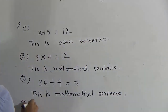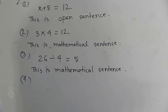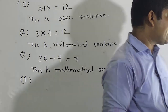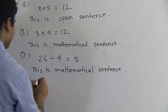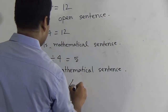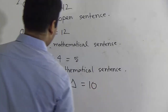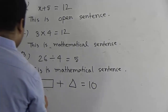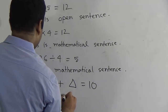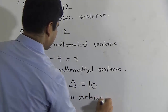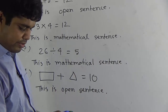Number 4: putting a quadrilateral and a triangle together makes 10. We write: quadrilateral plus triangle equals 10. We cannot determine if it is true or false, so this is an open sentence.